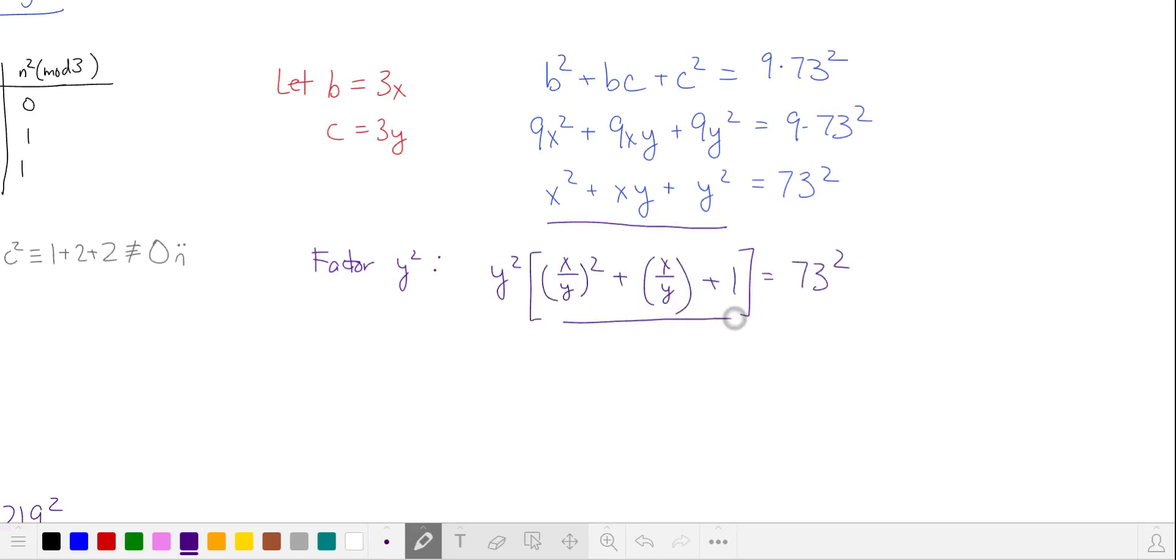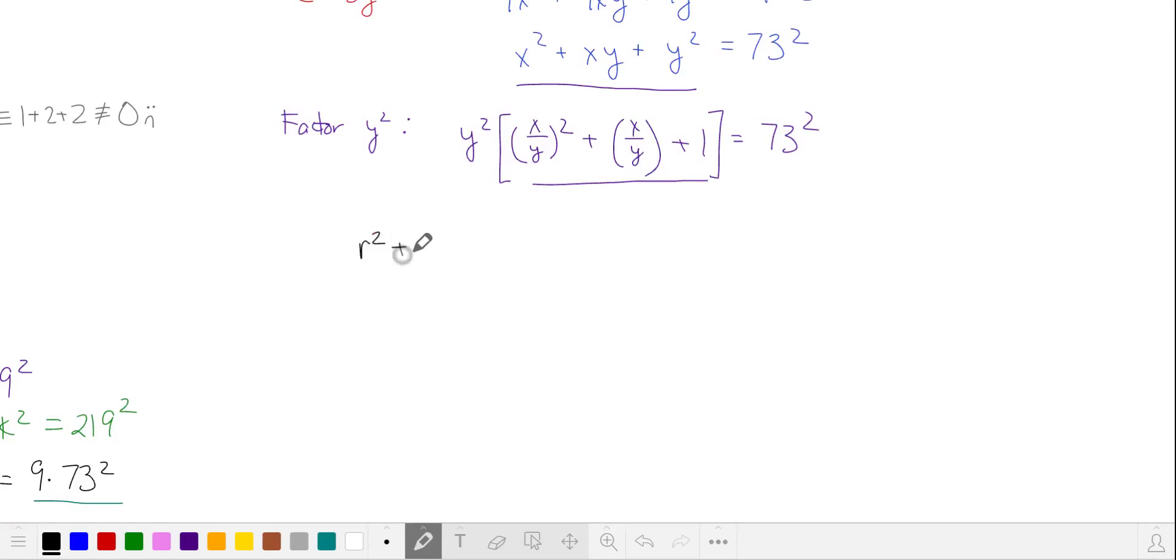Inside the parentheses, we have something that looks like this. This might remind you of r² plus r plus 1, which is part of the factorization of the difference of cubes, which is also part of the solution to the third roots of unity. We can factor r³ minus 1 as r minus 1 times r² plus r plus 1.